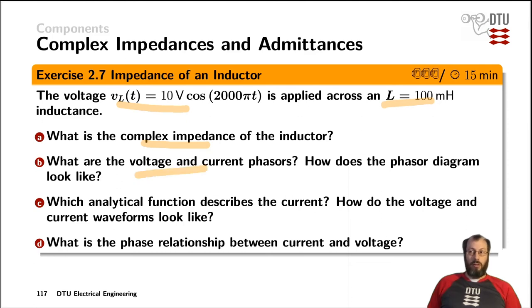What are the voltage and current phasors? And how does the phasor diagram look like? Which analytical function describes the current? And how do the voltage and current waveforms look like? Finally, what is the phase relationship between the current through that inductor and the voltage across it?